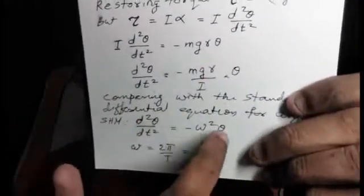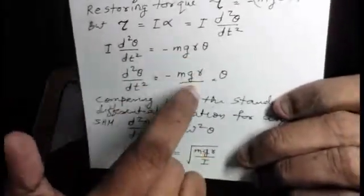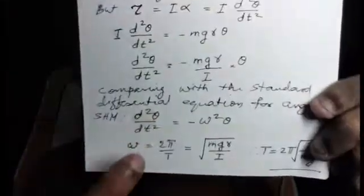Rotation quantity theta is equivalent to linear displacement in linear motion. S is equivalent to theta. In the standard linear equation, d²x/dt² equals minus omega² x. Similarly, for angular simple harmonic motion, the rotational equivalent is d²theta/dt² equals minus omega² theta. So this equation is of the standard form of angular simple harmonic oscillations.